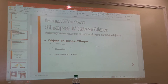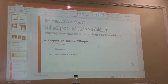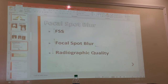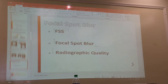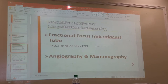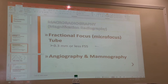On shape distortion, we talked about the two types: elongation and foreshortening. Know what causes that and how it affects radiographic quality. We talked about how focal spot size affects radiographic quality — as focal spot size increases, radiographic quality decreases.